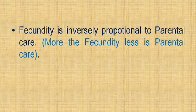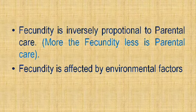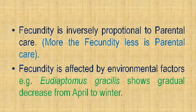Fecundity is also affected by environmental factors. For example, the species Eudiaptomus gracilis of copepoda — a group of phylum Arthropoda and a category of zooplankton — shows a gradual decrease in egg-laying capacity from April to winter. In April it lays around 11 eggs, whereas in winter that number may fall to five or six.